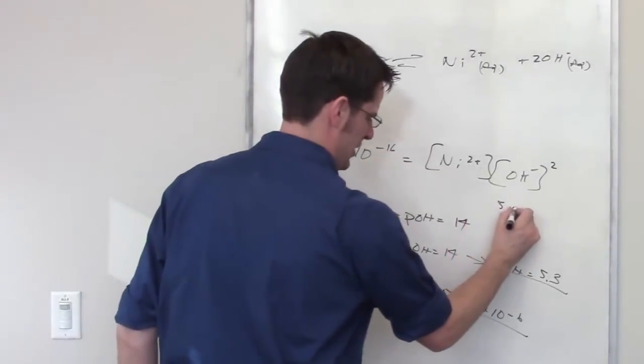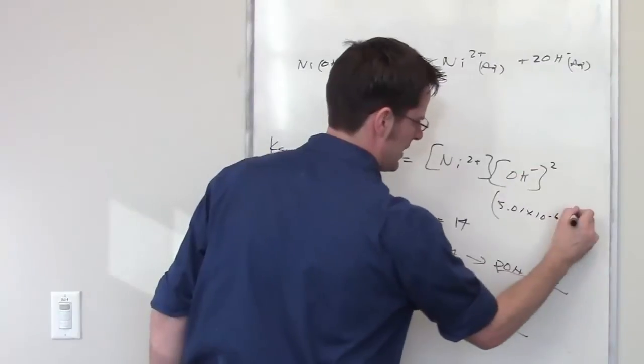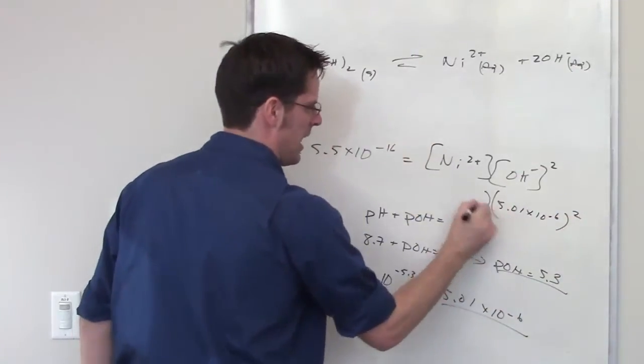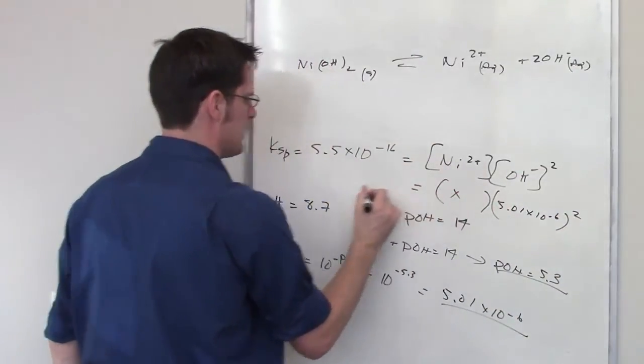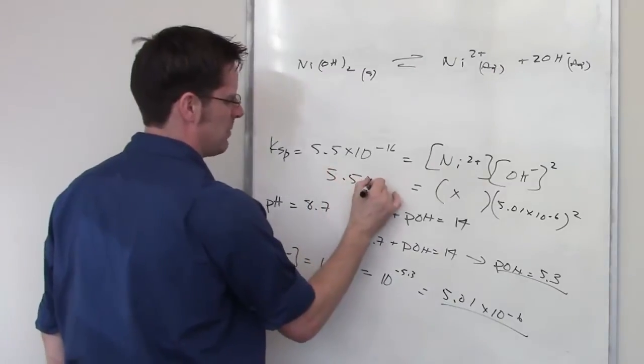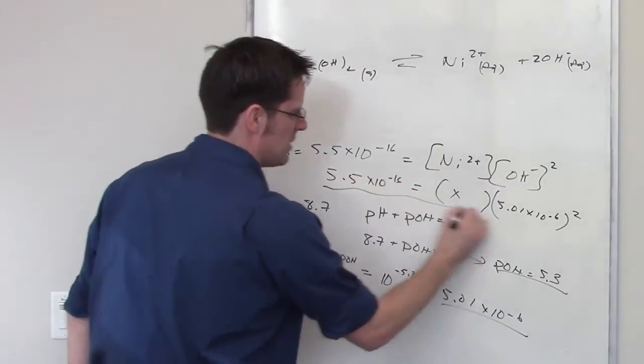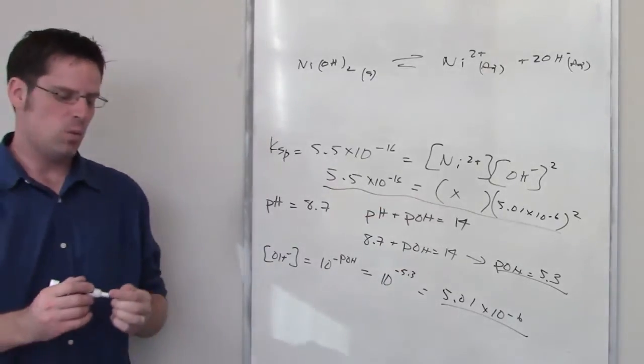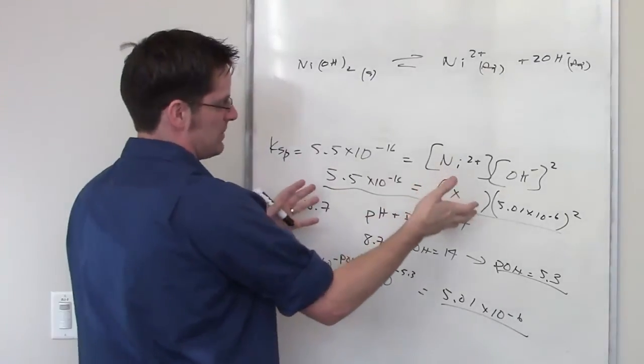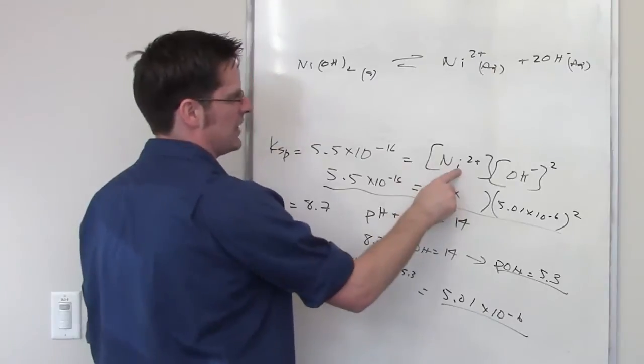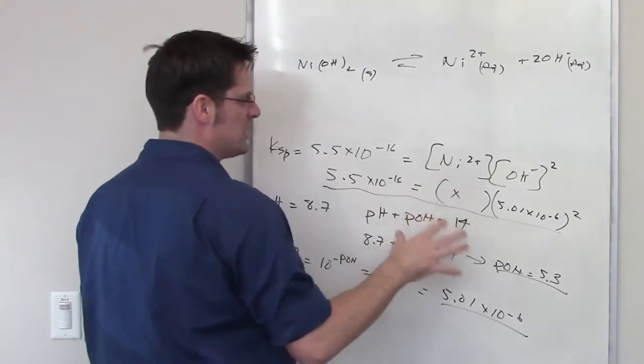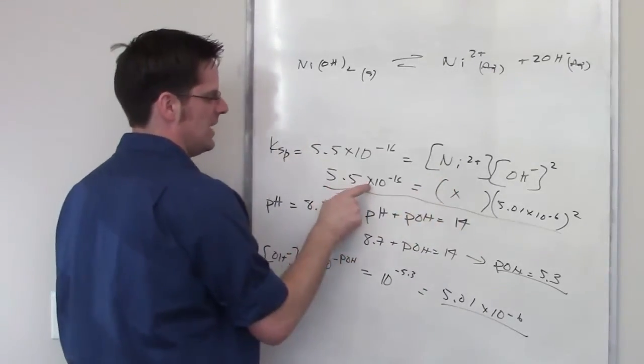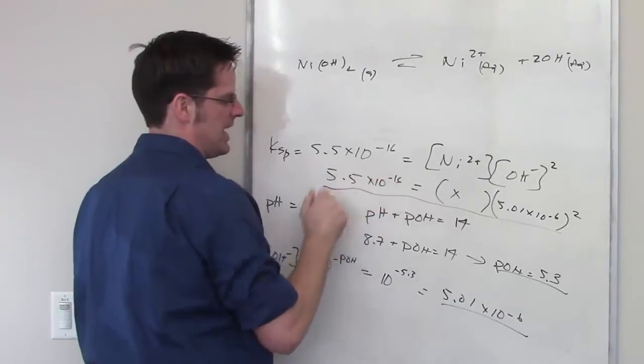I've got 5.01 times 10 to the negative 6. Throw it in here for the hydroxide to square that. And then I'll put x in here for nickel 2+. And I've got that equal to 5.5 times 10 to the negative 16. This is what I'm trying to solve for. If you solve for x here, what that tells you is that whatever x comes out to be is the exact concentration of nickel 2+ you need to get at this pH in order to get exactly the value of Ksp.